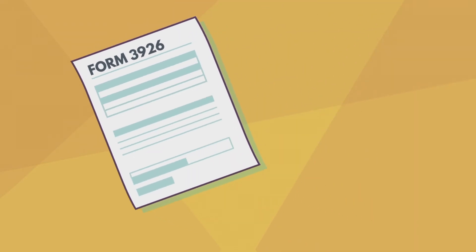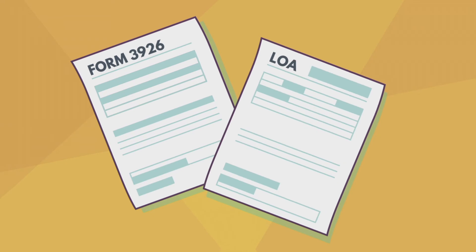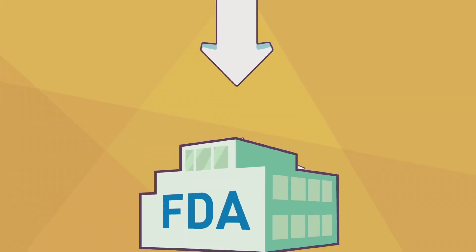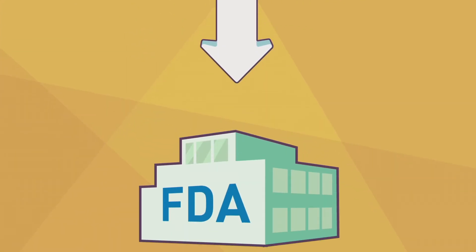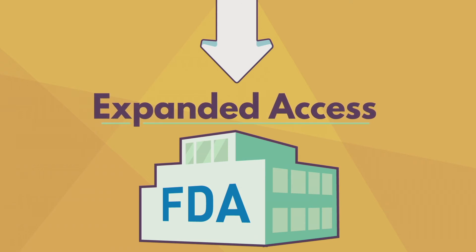Step 2: Complete Form FDA 3926 and submit it along with the LOA to FDA. This form is the basis of your expanded access request. Information on how to complete Form 3926 is available online.